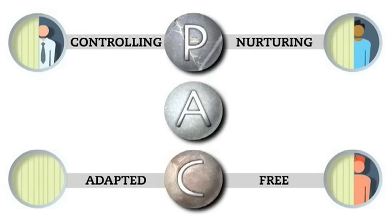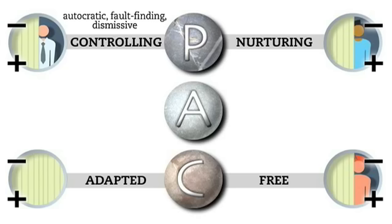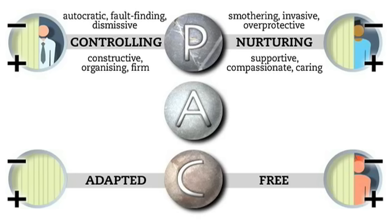There's huge scope for all kinds of child and parent behaviour here. Taking the parent state, on initial viewing it might seem controlling is negative and nurturing is positive. But let's look closer. Controlling can cover some very negative traits, like bossy, autocratic, fault-finding and dismissive. But it can also lead to positive experiences where structure and direction is needed, and criticism can be given in constructive, considerate ways. Nurturing might seem positive when expressed in support, compassion and care. But it can also be smothering, stifling and overprotective, and end up feeling more critical than nurturing.